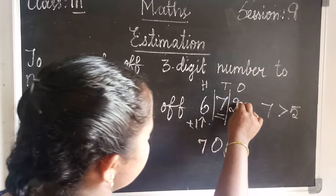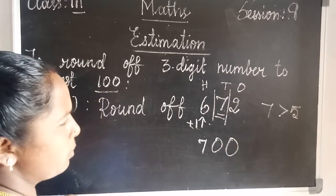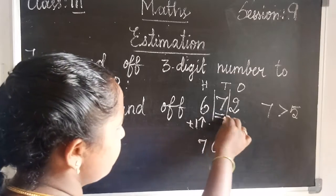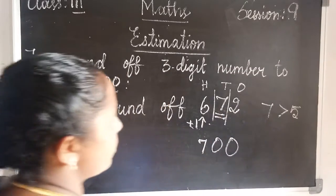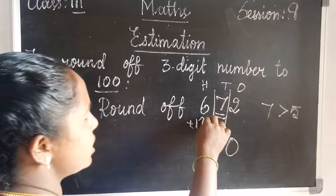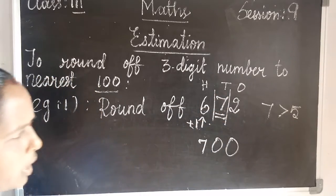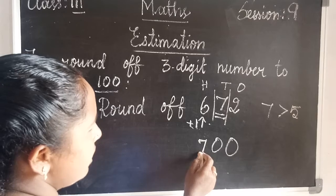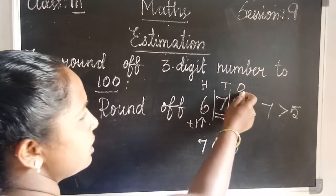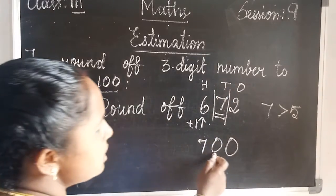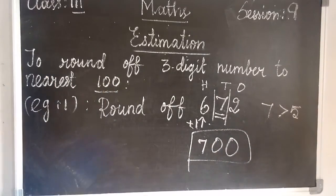You see the ones place, tens, and hundreds. Step 1: look at the tens place value — 7 is greater than 5, so increase the hundreds place by 1. That means 6 plus 1 is 7. Then tens and ones place value becomes 0. The answer is 700.